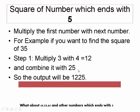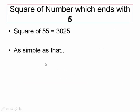So the final output will be 1225. Let us take an example. Square of 55. Now, 5 into 6 is 30 and 5 square is 25. So 3025 is the output. As simple as that.